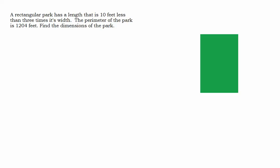In this video we are going to look at an application problem that involves perimeter of a rectangle. Let's take a look. A rectangular park has a length that is 10 feet less than 3 times its width. The perimeter of the park is 1,204 feet. Find the dimensions of the park.